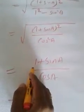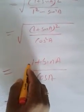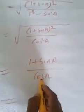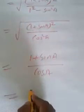Now separate the denominator: (1 plus sin A) by cos A becomes 1 by cos A plus sin A by cos A. What is 1 by cos A? That is sec A. What is sin A by cos A? That is tan A. So we have successfully reached RHS. Separating the denominator: 1 plus sin A divided by cos A becomes 1 by cos A plus sin A by cos A, which is sec A plus tan A. We have reached RHS.